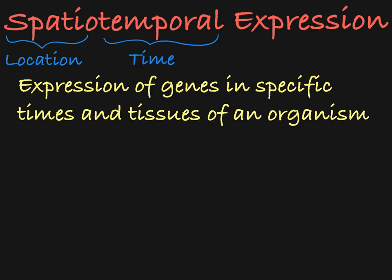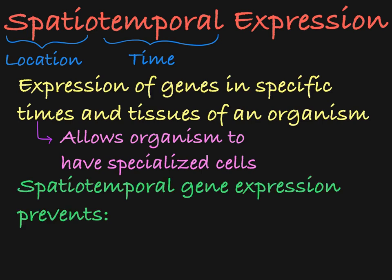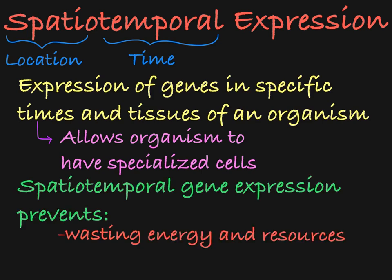Being able to control which genes are expressed and when and where they are expressed allows the cells of an organism to be specialized, performing different functions throughout the body. While there are certain genes that must be expressed at all times in all cells, there are other genes that encode proteins that are only used in a specific subset of cells. It would be a waste of energy and resources to produce this protein in all cells when it's only necessary to the function of some cells.